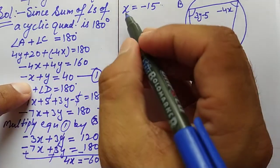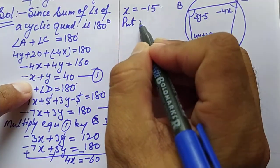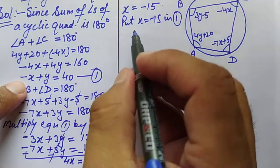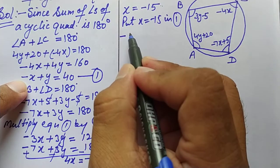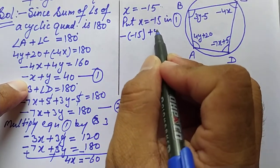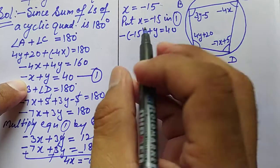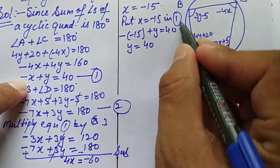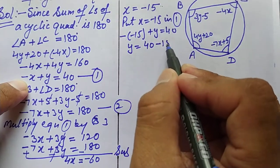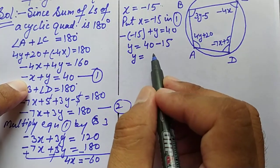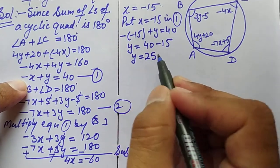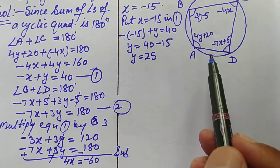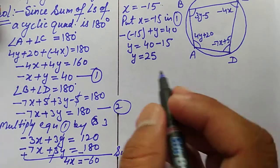Now we substitute x = −15 into equation 1: −(−15) + y = 40, so 15 + y = 40, giving y = 25. So x = −15 and y = 25. We will now substitute these values into the different angle expressions to find their measures.